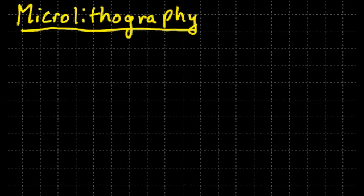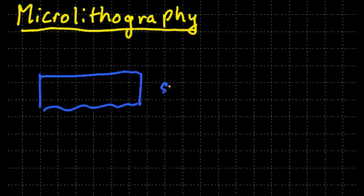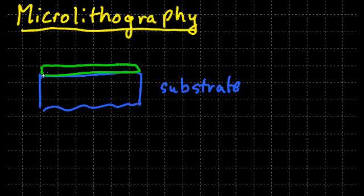So I just want to give the general idea, first of all, which is that you start with some kind of a substrate. And on the substrate, there's a thin film. That might be an insulator, it might be a metal, it might be a semiconductor.